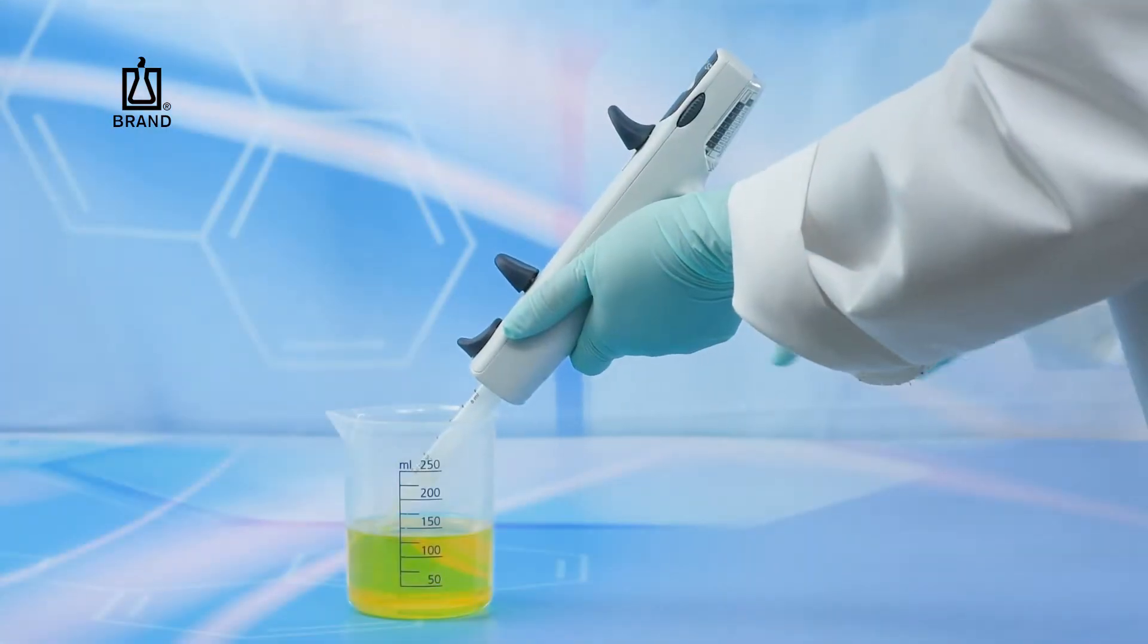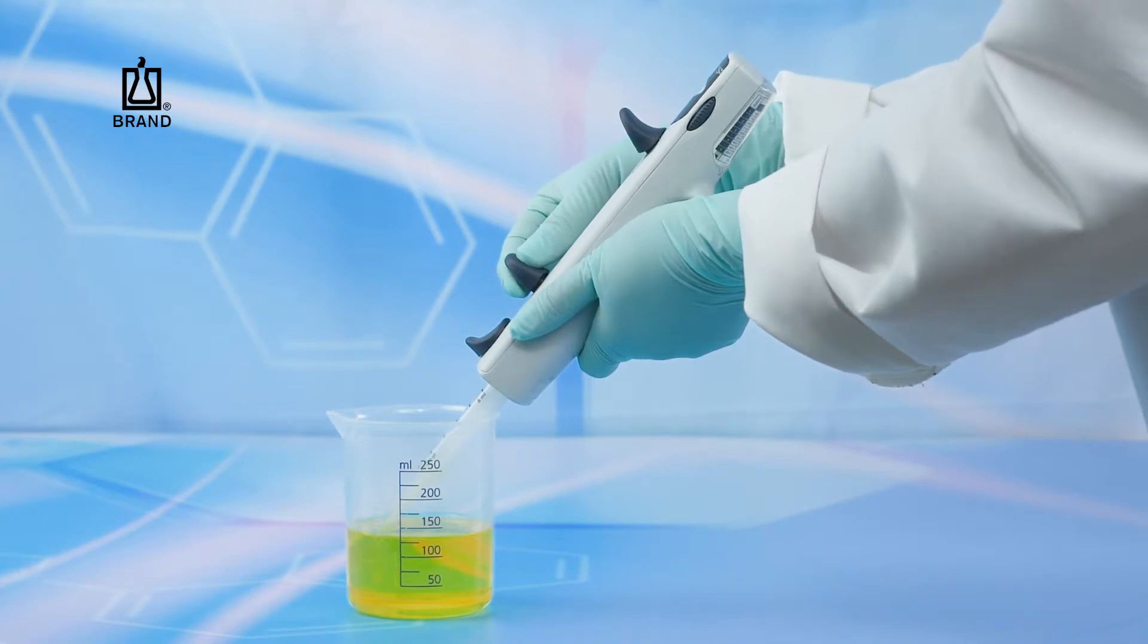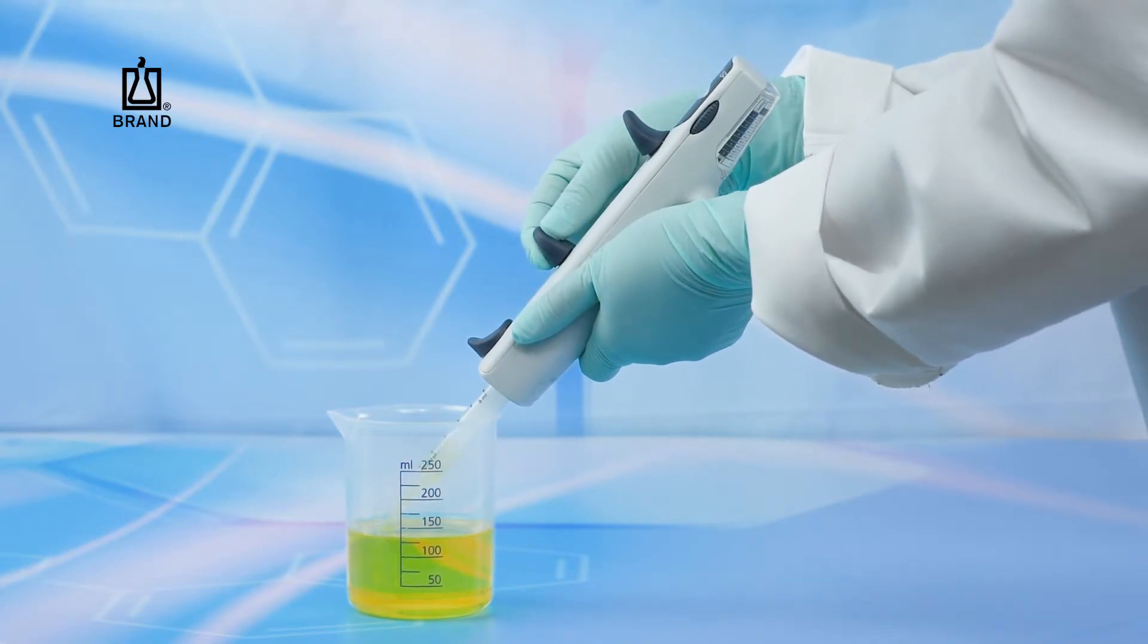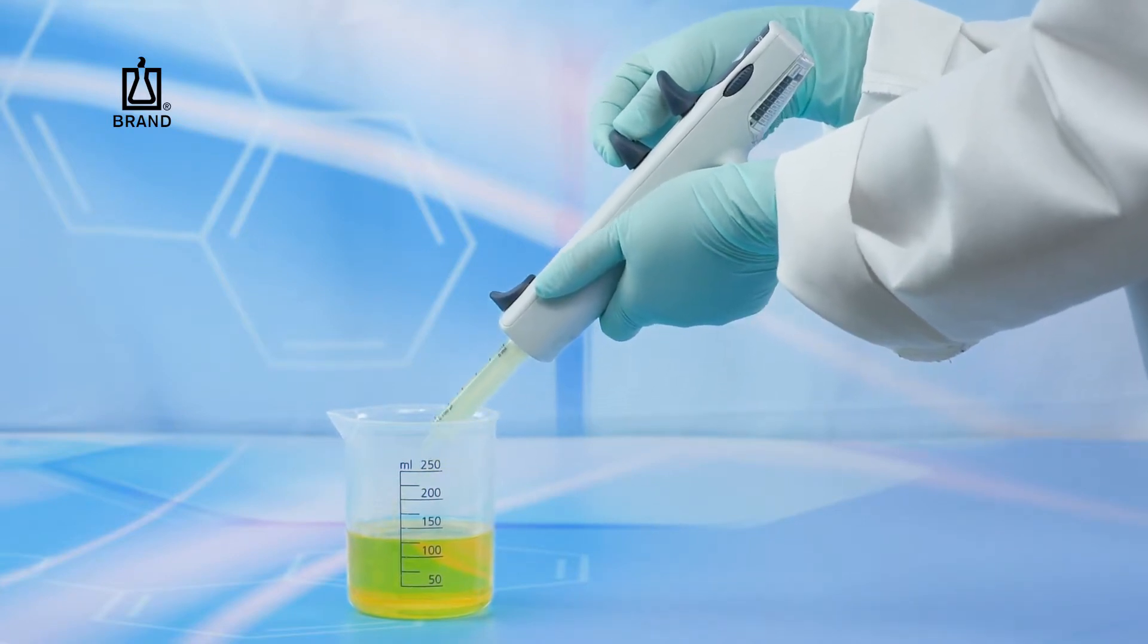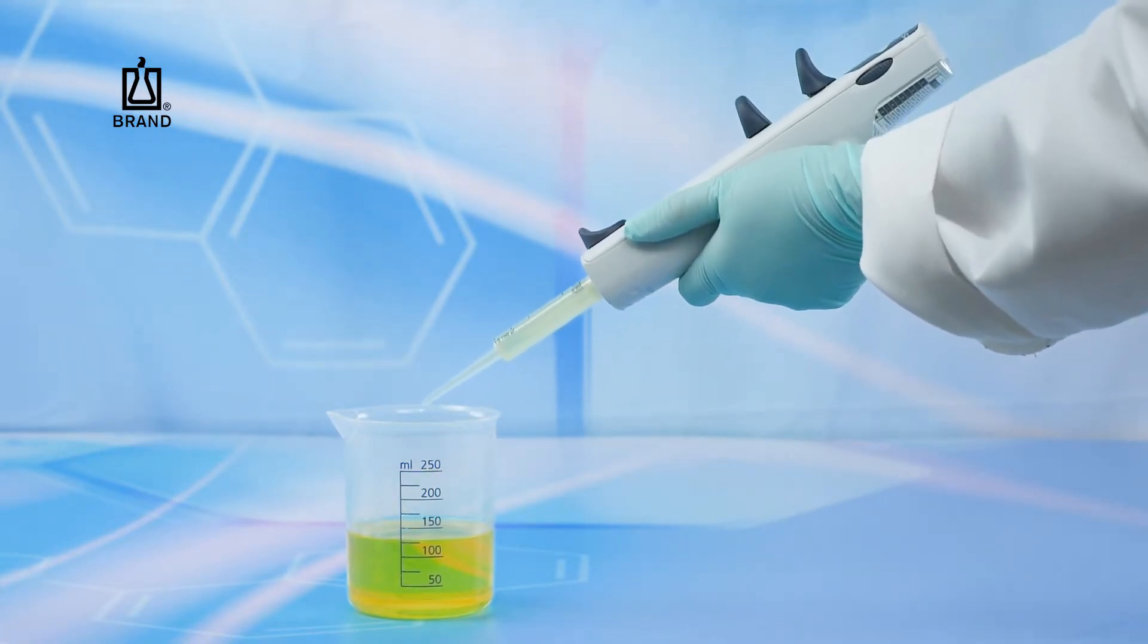To aspirate liquid, make sure the piston is in the lower position. Insert the end of the PD tip 3 to 10 millimeters into the liquid to be dispensed and pull back slowly on the locking filling lever to draw the liquid into the PD tip.